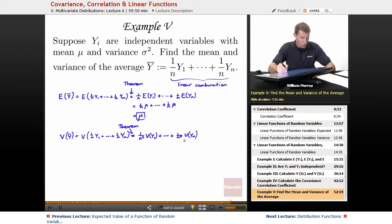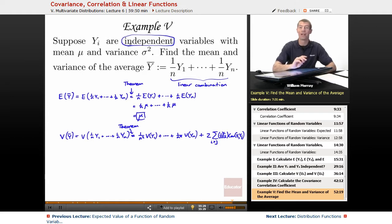And then there's these cross terms. So there's this cross term, which is 2 times the sum as i is bigger than j of the coefficients, 1 over n times 1 over n times the covariance of yi with yj. So that looks pretty dangerous there, but let's remember that we are given that we have independent variables. So any yi and yj, if you take their covariance, since they're independent, this covariance will be 0 by independence. That's really nice.